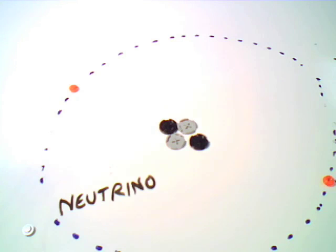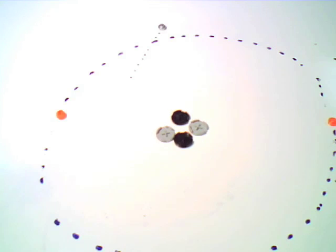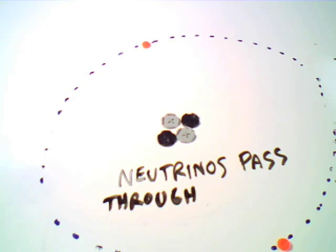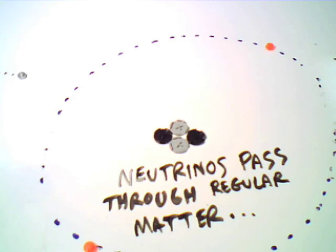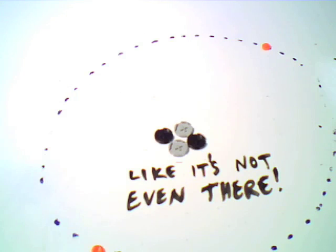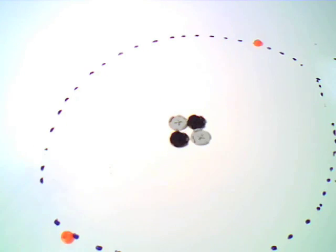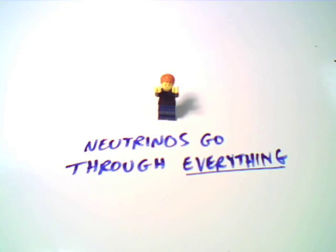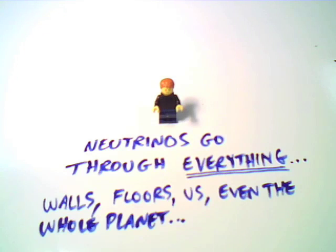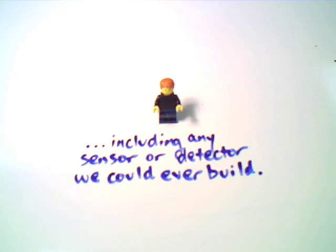But neutrinos don't act the same way. A neutrino has no electrical charge on it, so therefore no electrical forces act on it. So the neutrino passes right through regular matter, also known as atoms, like it's not even there. So neutrinos pretty much go through everything: walls, floors, us, the earth, the sun, everything. But this also means they'll go right through any sensor or detector we could ever build.